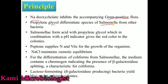Propylene glycol is specially used to identify Salmonella bacteria and differentiate them from other bacteria. Salmonella produces acid, which binds with the propylene glycol, causing the pH indicator to drop down. As a result, we get red to pink color colonies, which are mostly Salmonella.